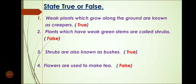Let's read True-False. Number 1: Weak plants which grow along the ground are known as Creepers. Here you have to write True or False — for statements which are true, write True; for statements which are false, write False. Weak plants which grow along the ground are known as Creepers — is it True or False?